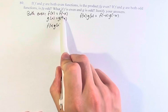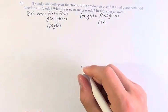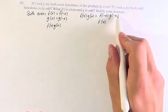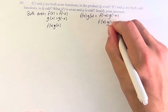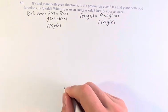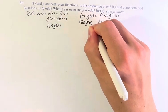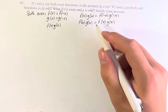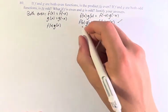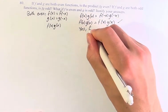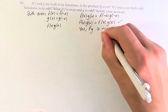Since f of negative x is equal to f of x, we can plug that in. And g of negative x is equal to g of x, we can plug this in. Therefore, f of x times g of x is equal to f of x times g of x. This is true. Therefore, yes, fg is even.